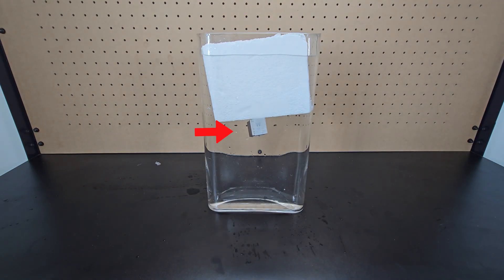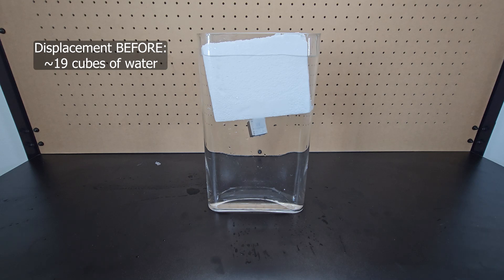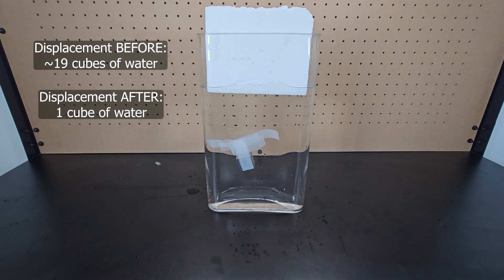With this in place, hopefully it becomes obvious that the weight of the tungsten cube is currently causing a little over 19 cubes of water to be displaced, but when it's dropped in 3, 2, 1, now it's only displacing 1 cube of water.